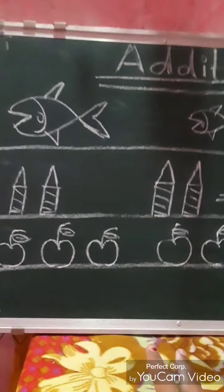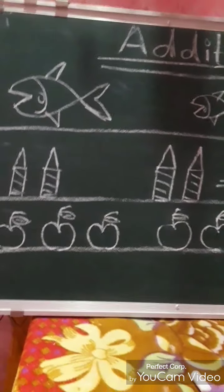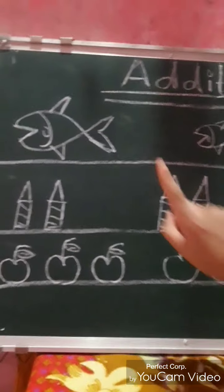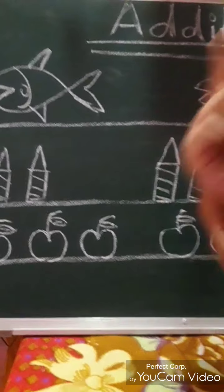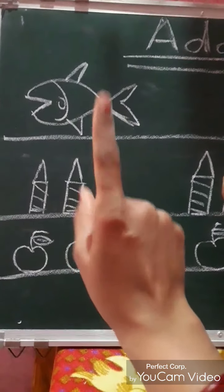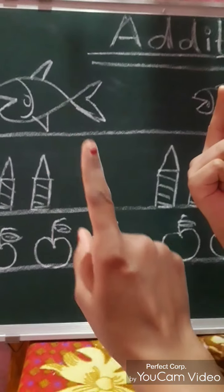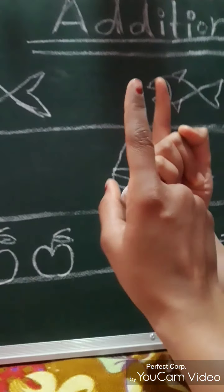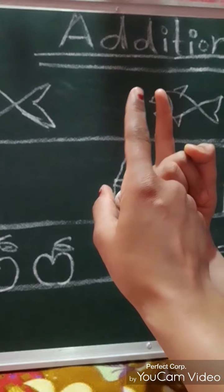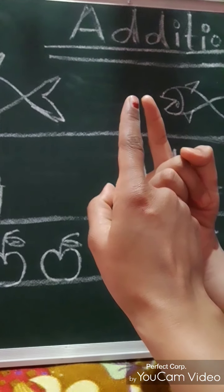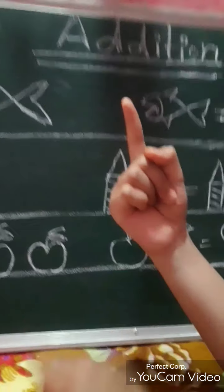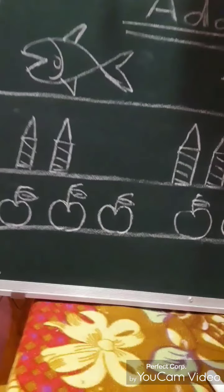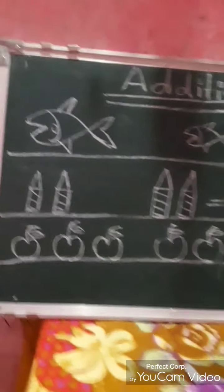Suppose in one hand you have one chocolate, and in another hand you have another one chocolate. So when we put these two chocolates together, after putting we will start to count the total chocolates. This whole process is called addition.